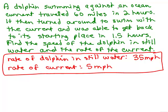So the dolphin swimming against an ocean current traveled 60 miles in 2 hours. So we're going to do the rate times time distance and see if that really makes true. So against the current, if the dolphin is 35,